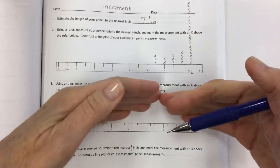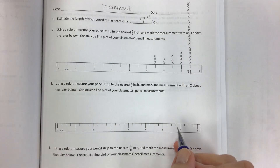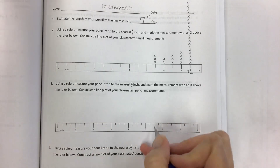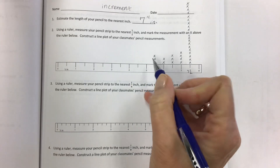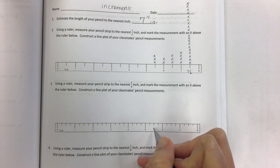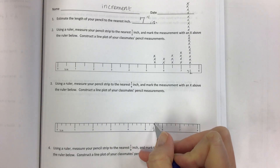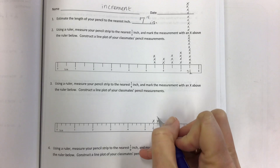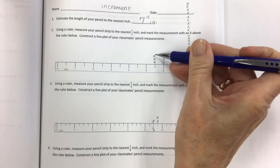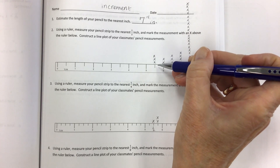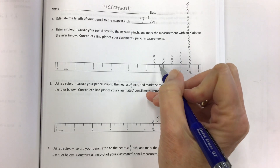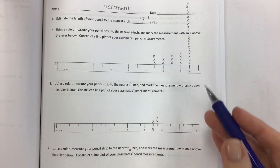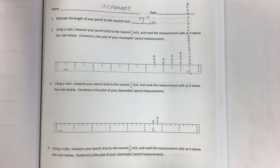We're going to take the same data and redistribute it on this number line with different increments — same data, different increments. We started last time with three people at five and a half, but this time when I asked how many had their pencil exactly at five and a half, only one did. But two people had their pencil at about five and three-quarters — they were past five and a half last time but didn't have an increment to mark that. Here they do. So we have the same number of X's, the same number of students, but the data is redistributed.